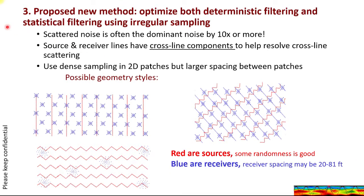Here's a third approach to acquisition — my proposed new approach to optimize both deterministic filtering and statistical filtering using irregular sampling. This is targeting the scattered noise, which is often the dominant noise by 10x or more. You may notice the red sources and blue receivers all have some cross-line components, and the reason is to help resolve cross-line scattering. We're using dense sampling in 2D patches, but larger spacing between the patches.